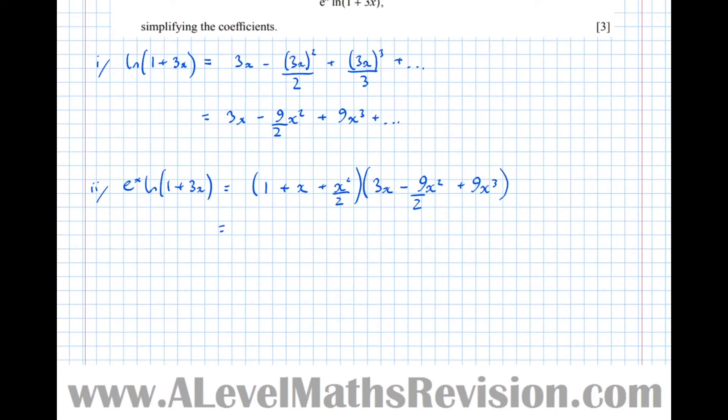So equals, let's multiply it out. We get 1 times 3x which is 3x, take 9x squared over 2 plus 9x cubed. Then multiplying the second bracket by x, so plus 3x squared take 9x cubed over 2. The next one's going to give us an x to the 4. We've already got powers 1, 2, and 3 of x, the first three terms, so power of 4 we can ignore. Then timesing everything in the second bracket by x squared over 2, so plus 3x cubed over 2. Anything else that we multiply is going to give us a power higher than 3.